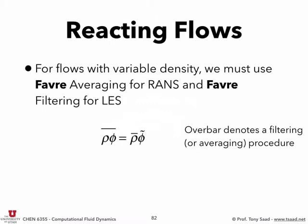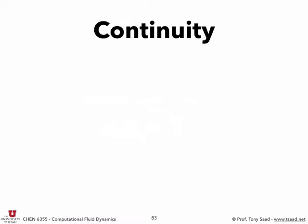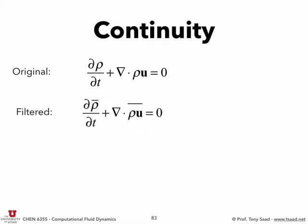We apply this procedure starting with the continuity equation. Taking its filter, we get d(rho-bar)/dt plus div(rho-u-bar). Now rho-u-bar equals rho-bar times u-tilde. We end up solving for u-tilde and rho-bar. The continuity equation doesn't change significantly — we just introduced the Favre definition so we can pipe it through the equations.